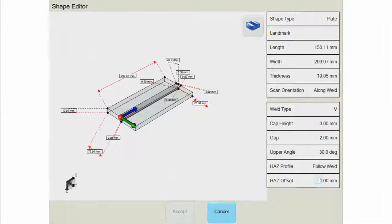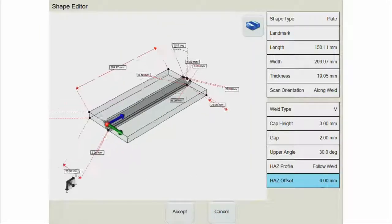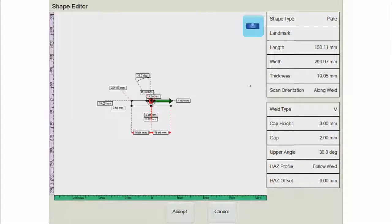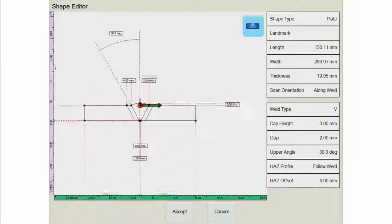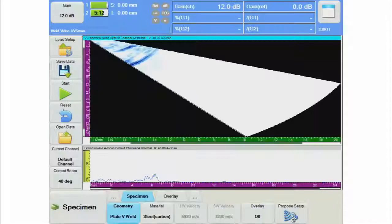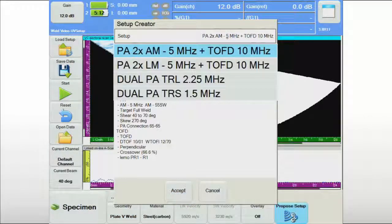The UltraVision Touch software guides the UT operator through an efficient workflow for preparing the weld inspection. The weld geometry, including bevel and heat affected zone parameters, can be easily configured in the graphical user interface of the TOPAZ-16. Once the specimen is completely defined, the UT operator can use the proposed setup feature of UltraVision Touch.